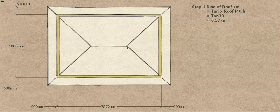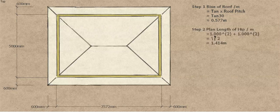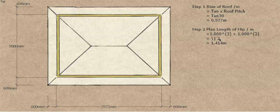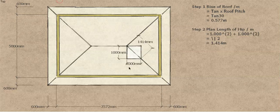Then we need to know how far the hip actually runs per meter on plan. If you do Pythagoras — 1 meter squared plus 1 meter squared — you get 2, and the square root of 2 gives you 1.414. That's a pretty common measurement in roofing calculations. Basically, for every meter the hip runs this way on plan, it actually travels 1.414 meters.